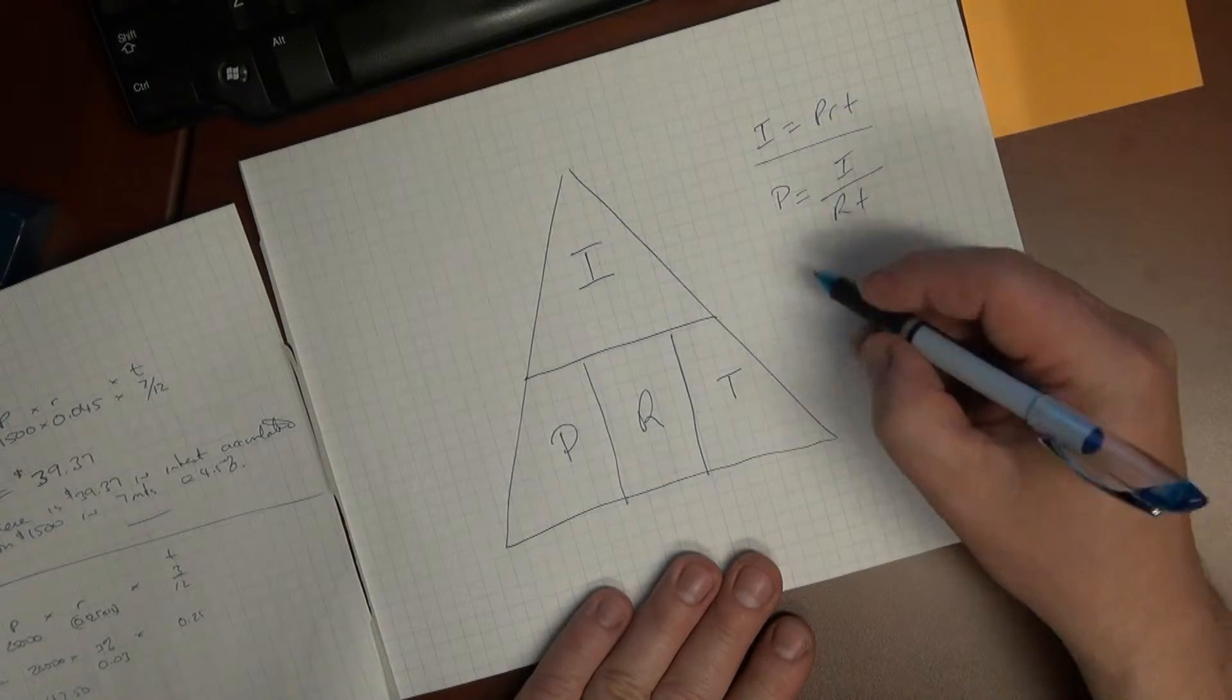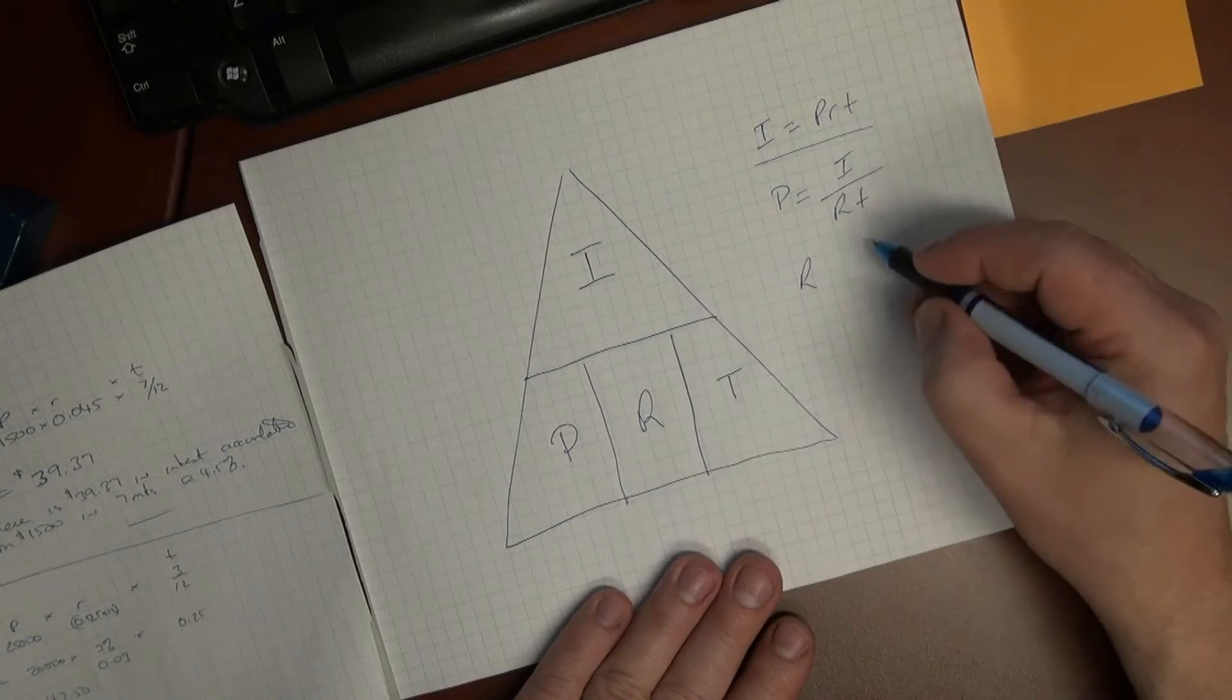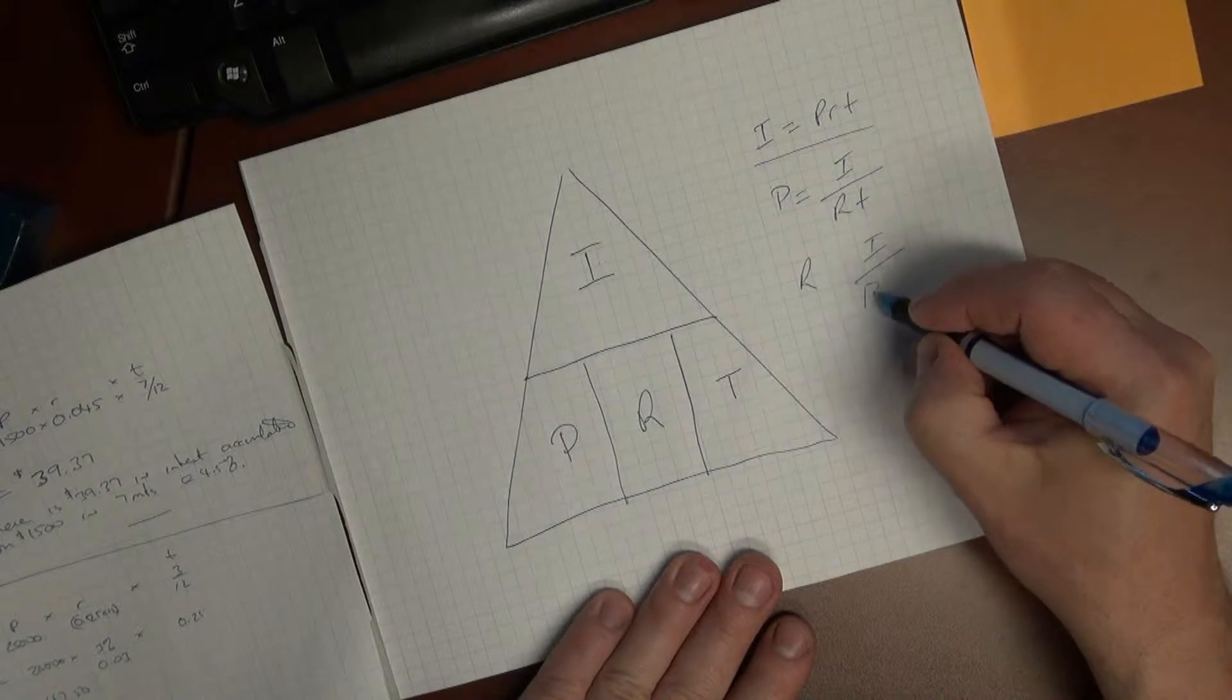If we're looking for R, the formula is I over PT.